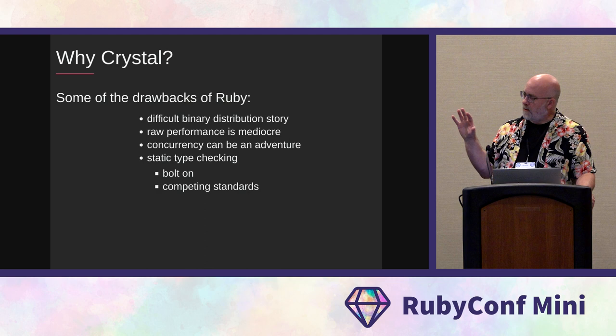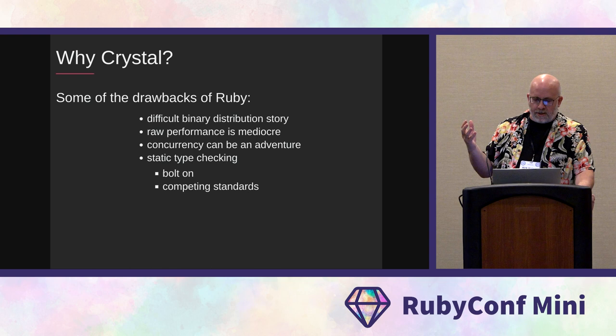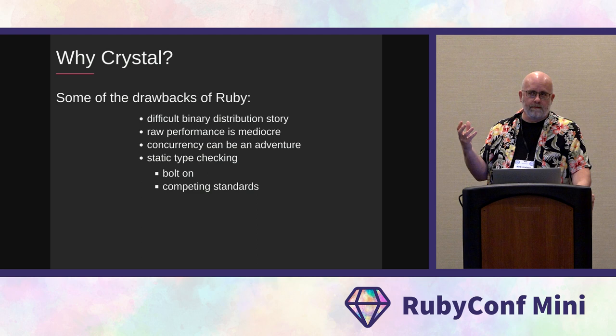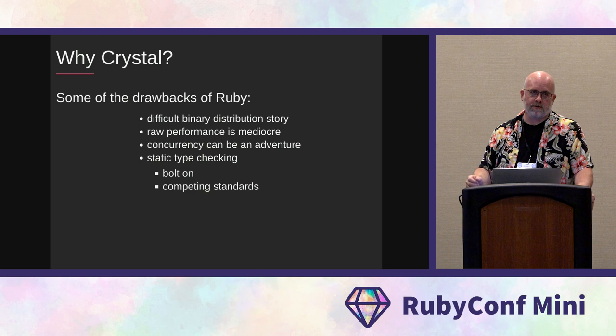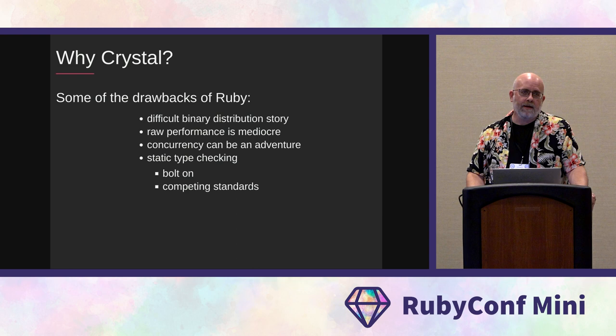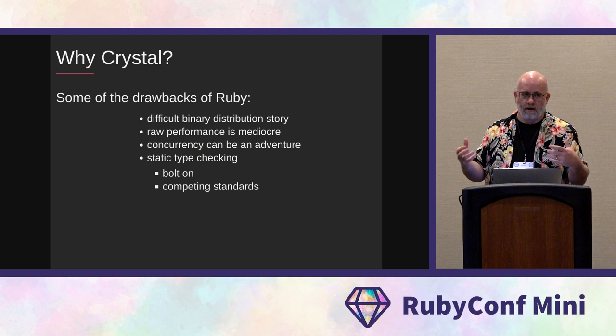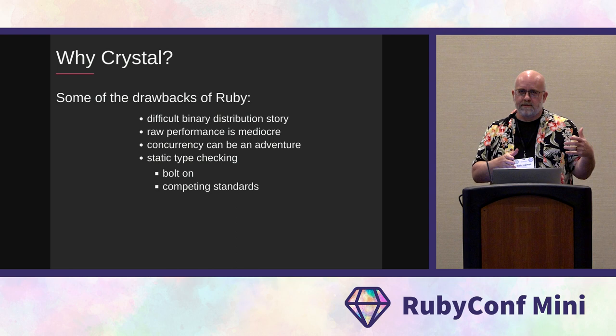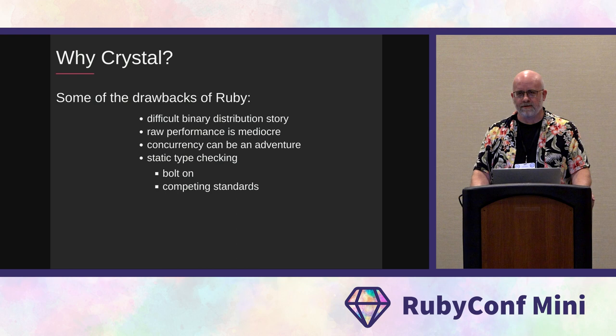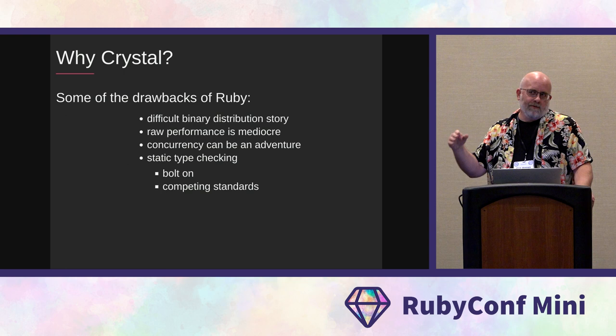There are some drawbacks to Ruby. If you're trying to distribute a Ruby binary, it's really difficult to do. There are projects that have existed for a long time to tackle this problem, but none has ever really dominated this space because there are so many dependencies wrapped up in Ruby code of any significance. MRuby is a Ruby-like language that will compile to an executable, but it's not really Ruby — there are significant differences — and you can't take your Rails app and turn it into an MRuby executable.